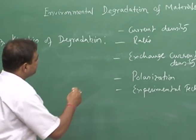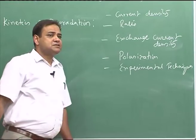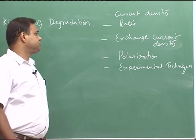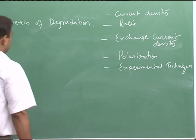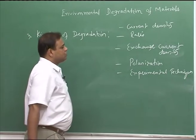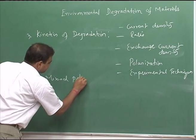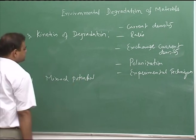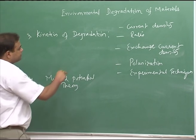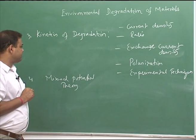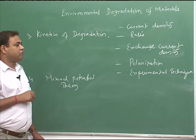The experimental techniques would allow us to find out the extent of polarization and the current density of different polarization — for example cathodic or anodic polarization. Once we understand these issues we can get to the mixed potential theory, which actually binds the kinetics of degradation and thermodynamics of degradation. This is the advanced theory in order to understand the corrosion of metals and alloys.